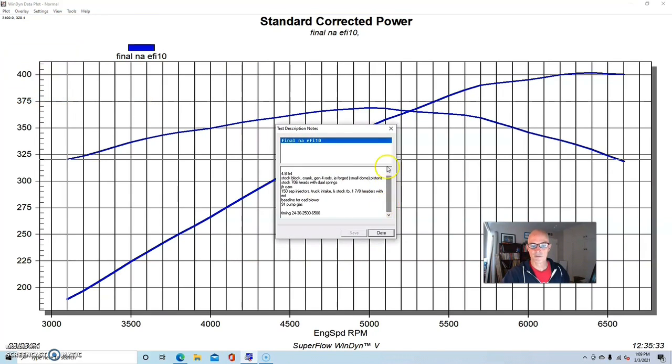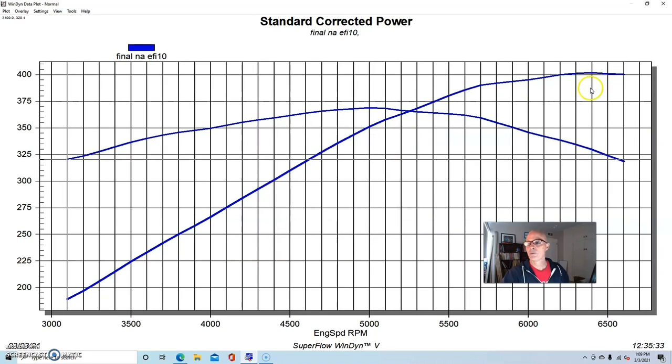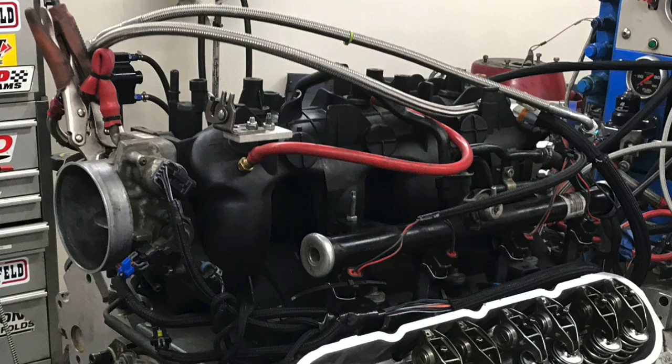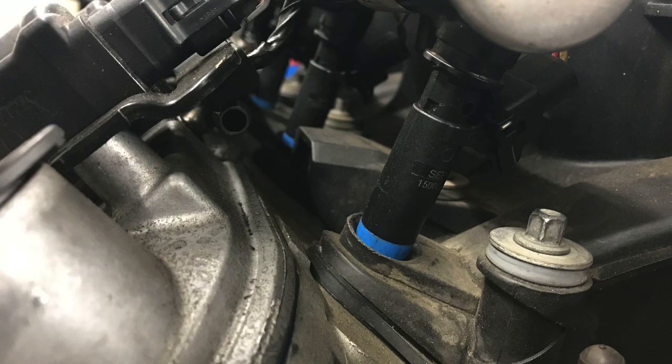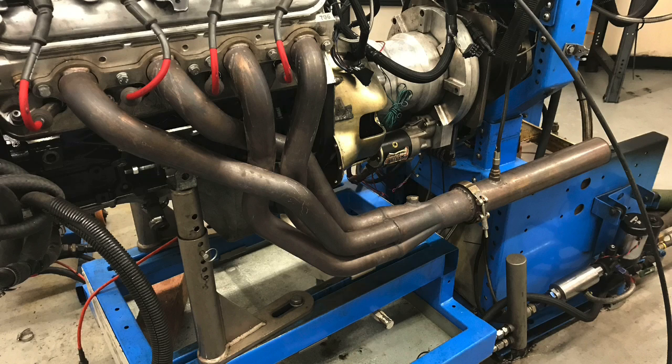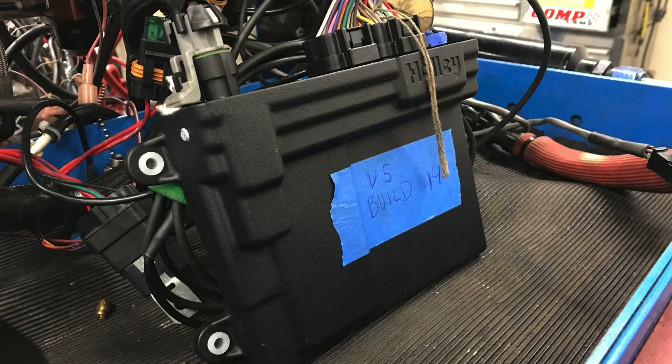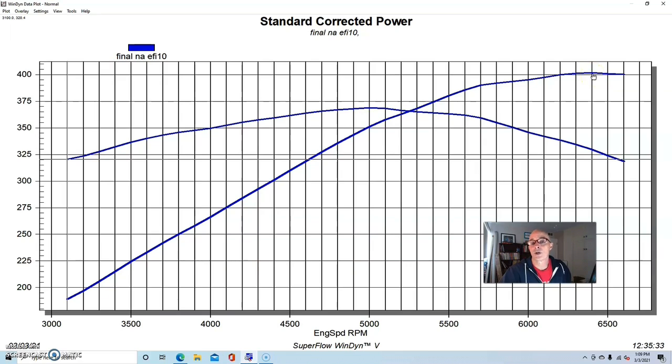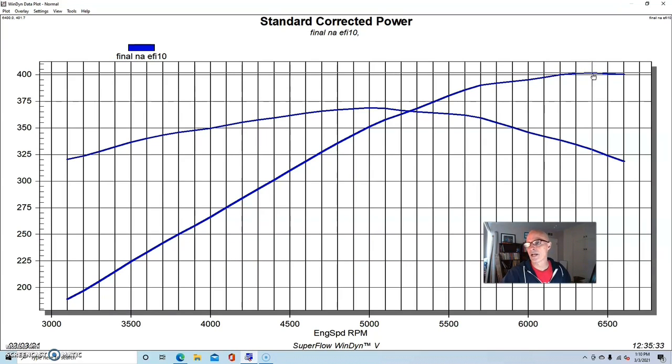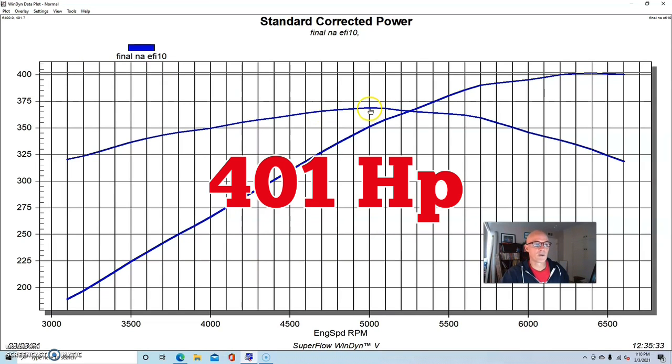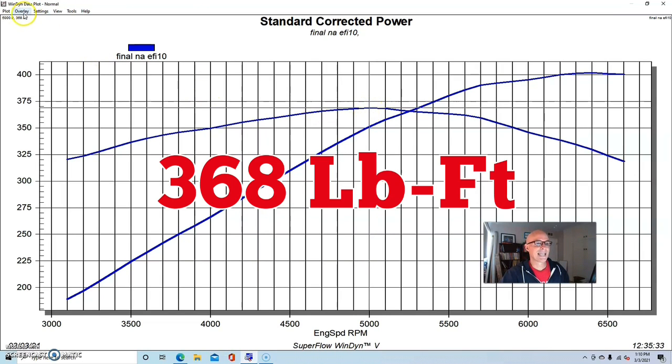We ran it with a stock truck intake. We had Snake Eater Performance 1500 CC injectors, 7/8 headers, Holley HP management system and the stock truck throttle body. So running naturally aspirated before we put the blower on, it made 401 horsepower and 368 foot-pounds of torque.